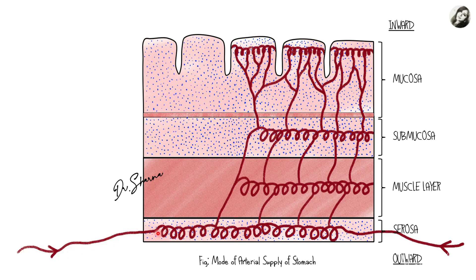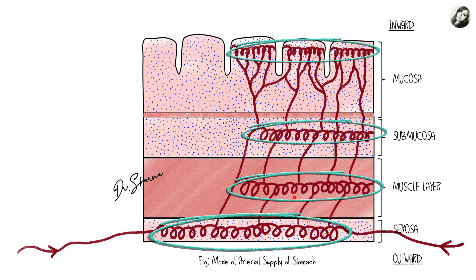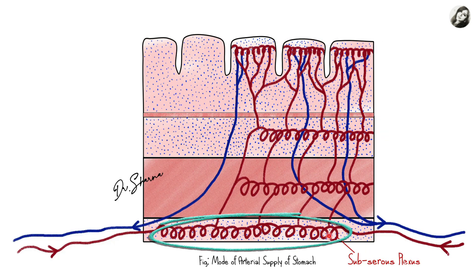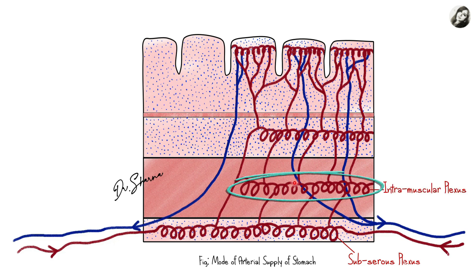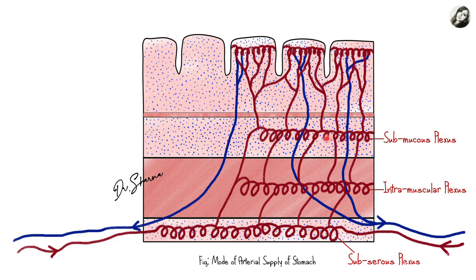The branches of the arterial arcades along the lesser and greater curvatures will penetrate the serosa first, then go deeper into the muscle layer, then the submucosa, and finally reach the mucosa of the stomach. While passing through these layers, these arteries form arterial plexuses in the different layers: first the subserous plexus in the serous layer, then branches enter the muscle layer and form the intramuscular plexus. Branches then enter the submucosa and form the submucosal plexus, which in turn sends mucosal arteries to the mucosa.